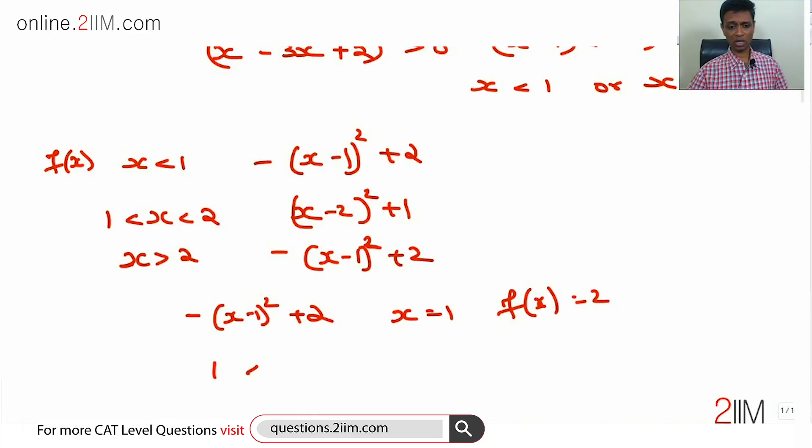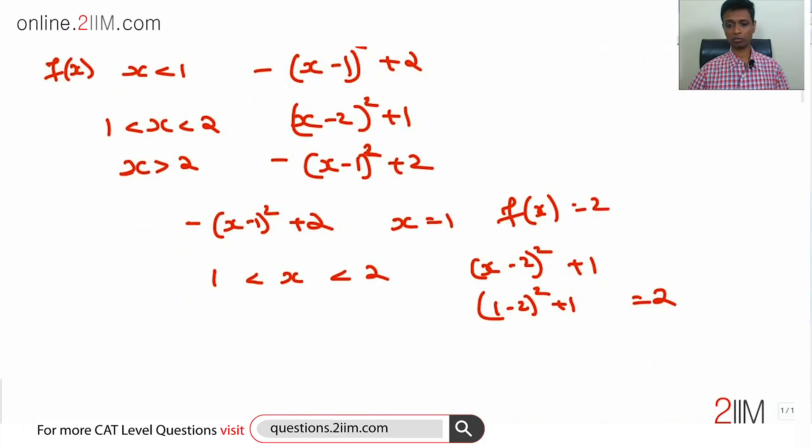Now let us go to this range, 1 less than x less than 2. It is (x-2)² + 1. The higher this modulus is, the higher the square will be. x-2 will be maximum magnitude when x is 1. This is (1-2)² + 1, or 1 + 1 is also 2, or the overall maximum possible value of f(x) is 2. That will happen when x is equal to 1.